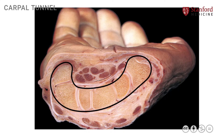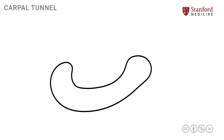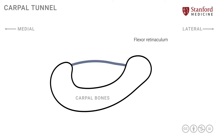This is the outline of the carpal bones that form the floor and the side walls of this tunnel. Getting oriented: these are the carpal bones with medial and lateral sides. The first structure we will put in place is the flexor retinaculum, which is the structure that converts this trough into a tunnel.